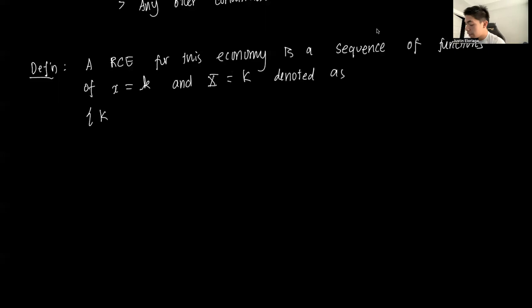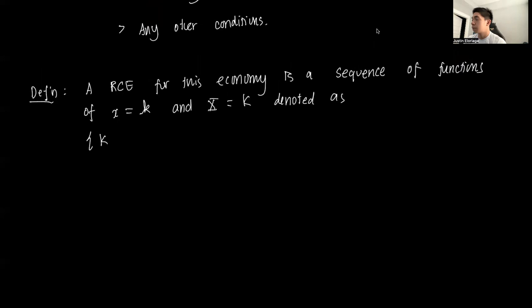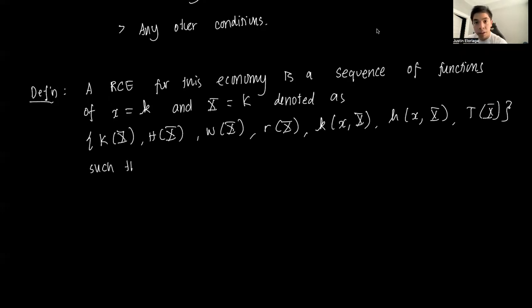Denoted as, so the list of functions: K is not a price, it's just an aggregate variable, so it's a function of the aggregate state. H is also not a price. W is a price, so it's a function of the aggregate state. R is a price, it's a function of the aggregate state. Small k is a function of both the individual and the aggregate state. Small h is a function of the aggregate state, as well as tax being a function of the aggregate state. Such that: